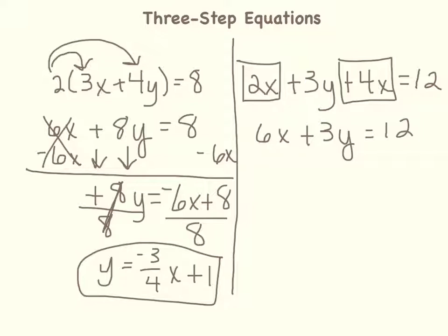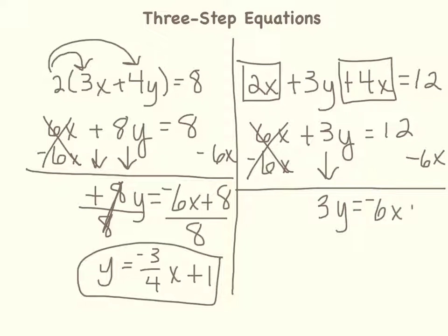I need to move 6x to the right side of the equation. And since it's a positive 6x, I subtract 6x, and I'll do that on both sides. So 6x minus 6x is 0, so it cancels out. I will bring down the 3y, and that's equal to negative 6x plus 12.